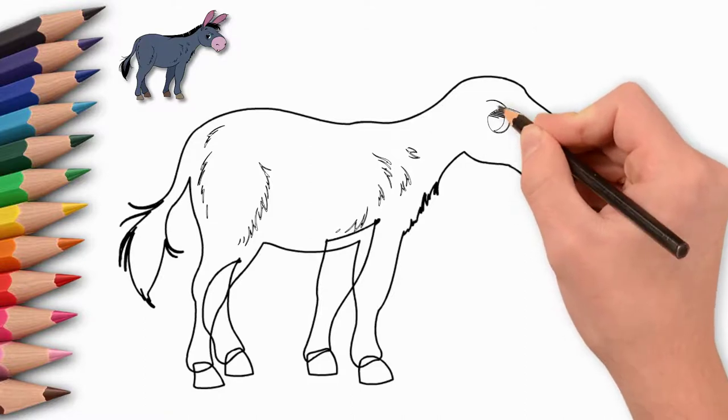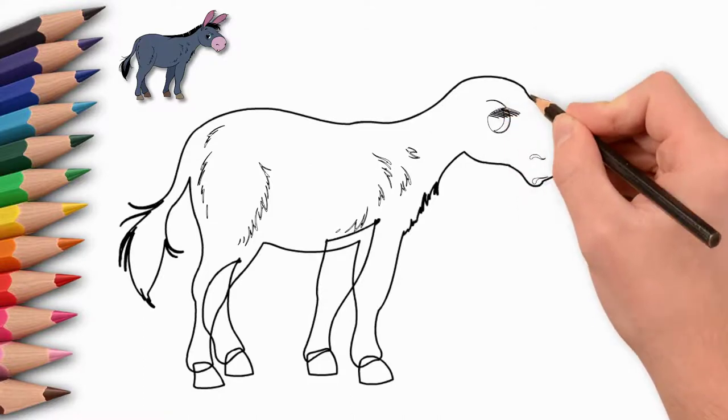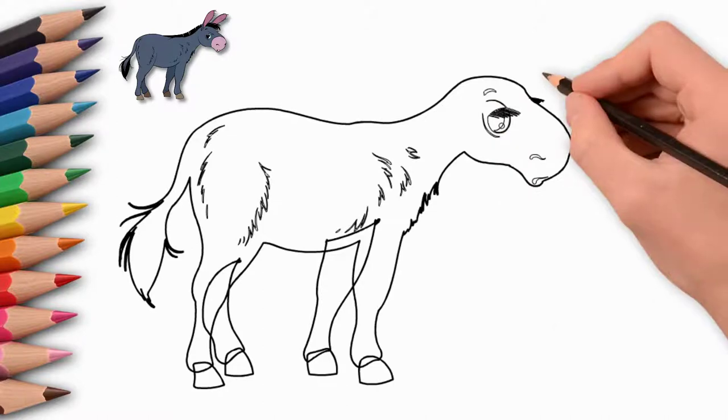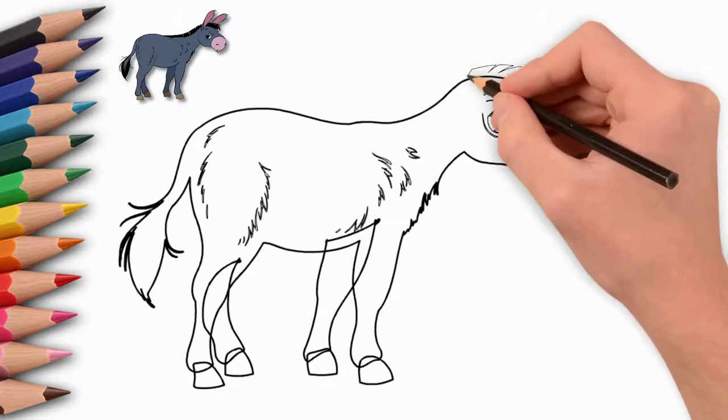Now let's draw a mane. It extends from the forehead to the middle of the spine. We draw a beautiful, large and well-groomed mane. Draw the gaps between the hair of the mane.